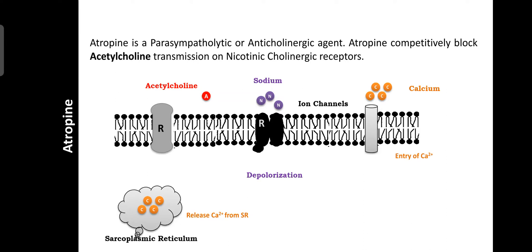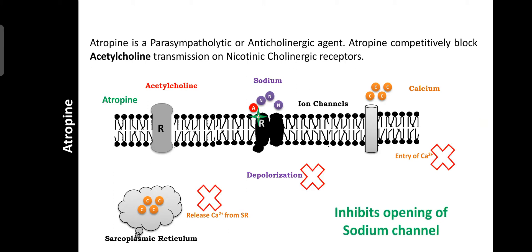After administration of atropine, atropine reacts on the acetylcholine receptors. Then acetylcholine fails to bind on the acetylcholine receptors — both nicotinic and muscarinic. Due to lack of binding, it inhibits the opening of sodium channels. Then it inhibits depolarization and release of calcium. Like that, atropine antagonizes the activity of acetylcholine on nicotinic cholinergic as well as muscarinic cholinergic receptors.